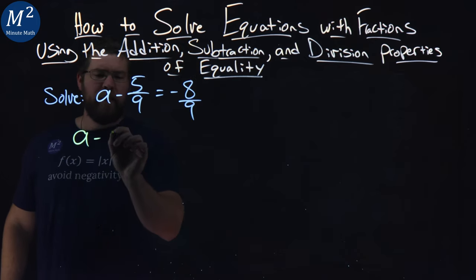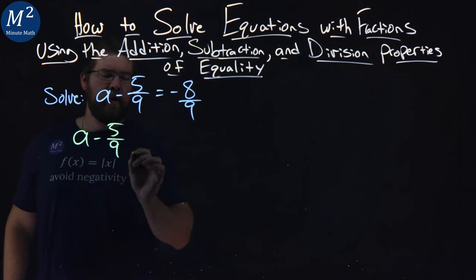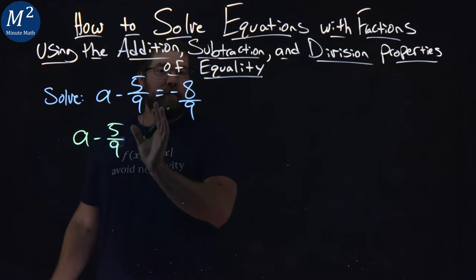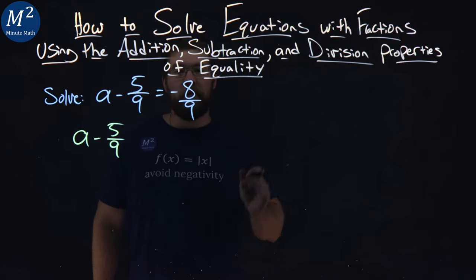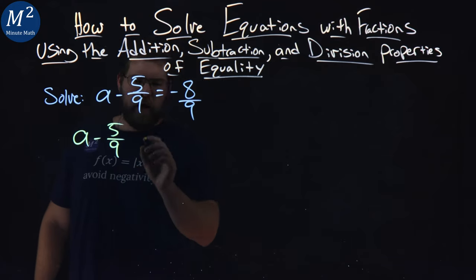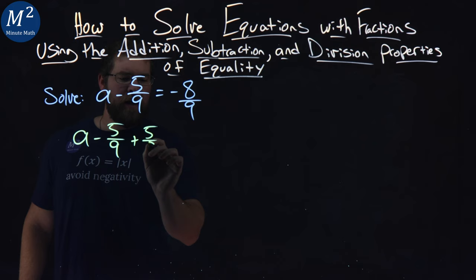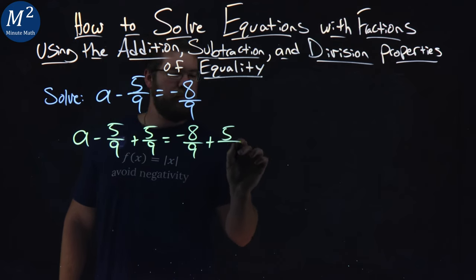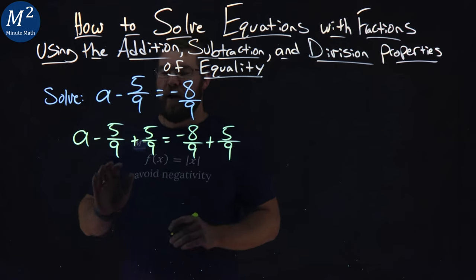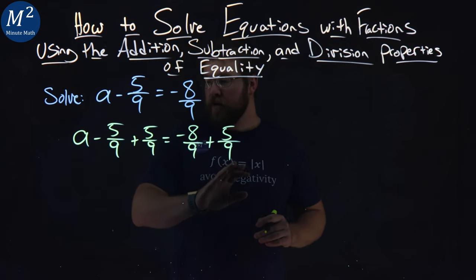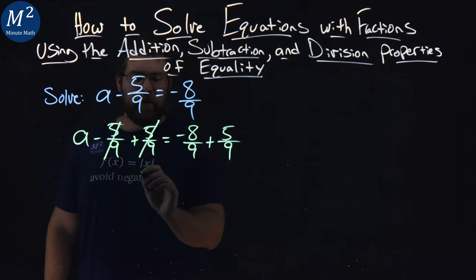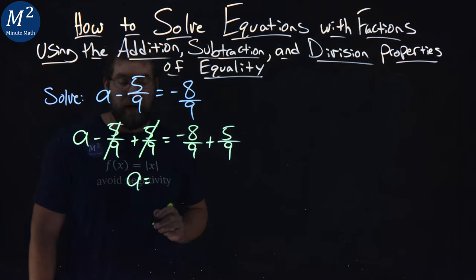So I'm going to rewrite part of this: a minus 5/9. But I know I can add one thing to one side of the equation if I also add it to the other, using the addition property of equality. If I add 5/9 to both sides, the left-hand side is going to cancel because negative 5/9 plus positive 5/9 cancels, and I have a by itself.